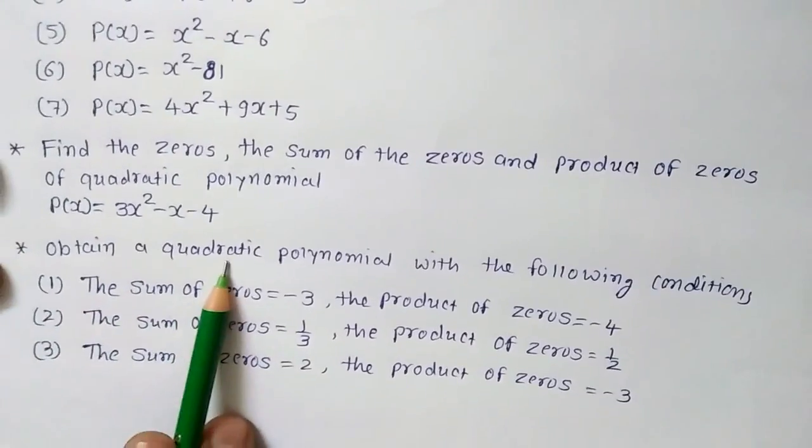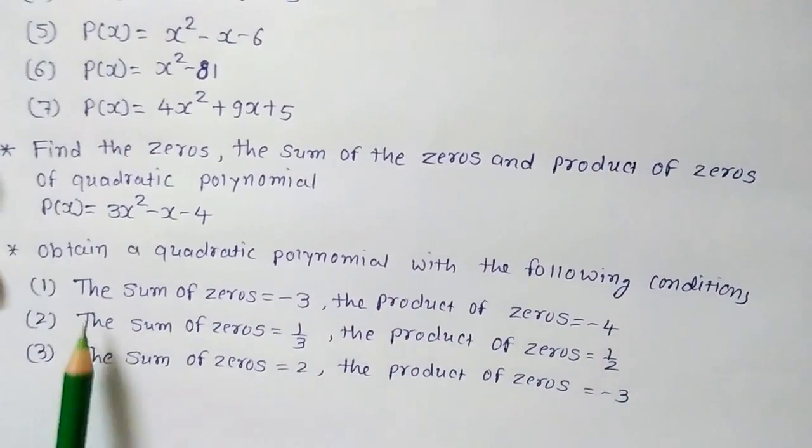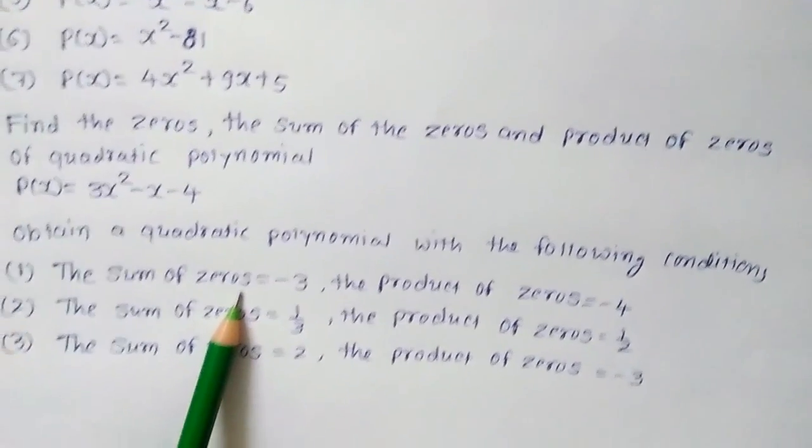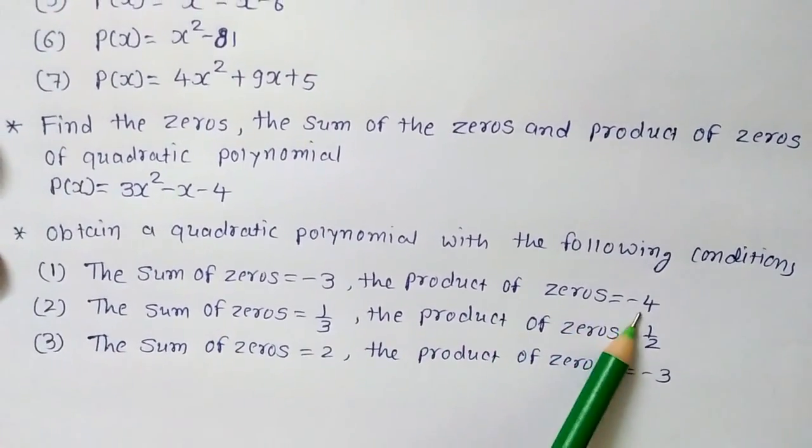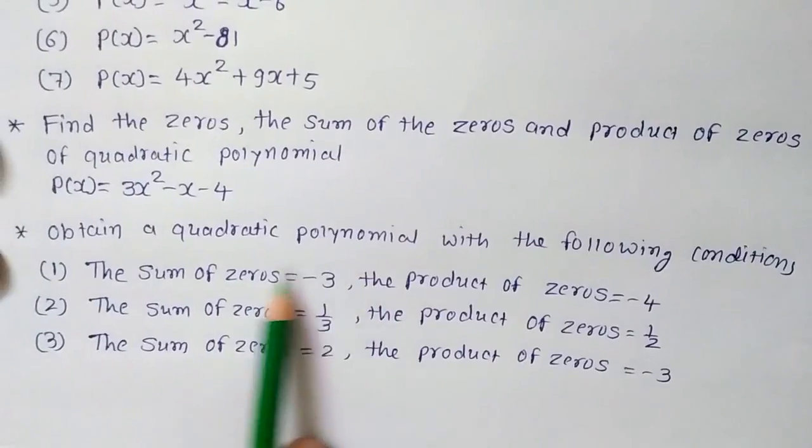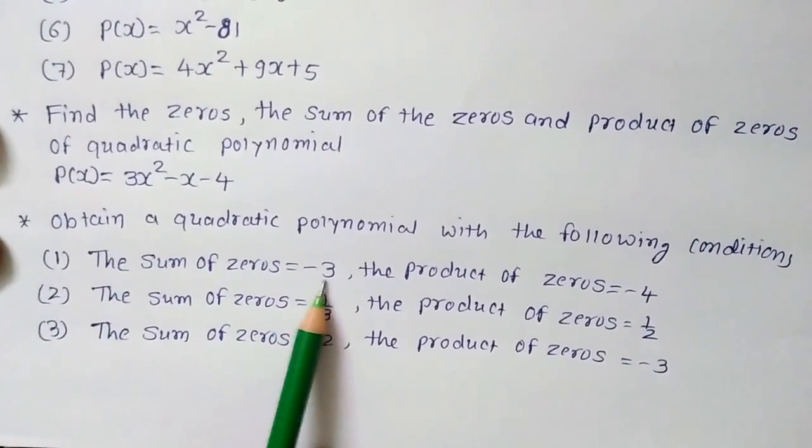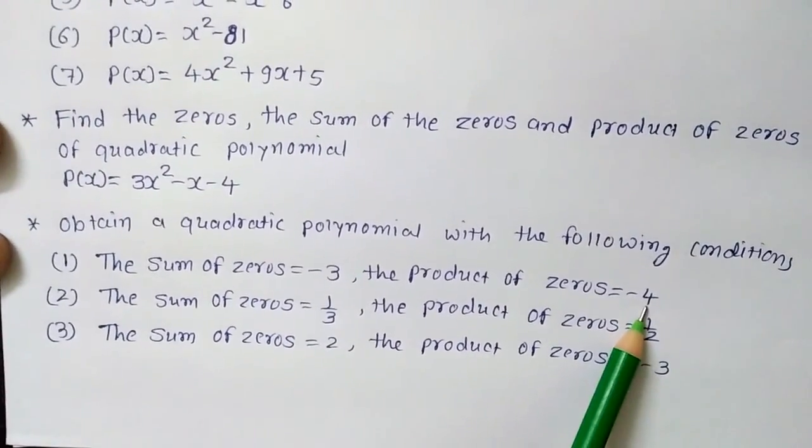Next, obtain a quadratic polynomial with the following conditions. Question number one, the sum of the zeros of the given polynomial would be minus 3 and the product of the zeros will be minus 4. You have to find out the quadratic polynomial from which we are getting this answer.